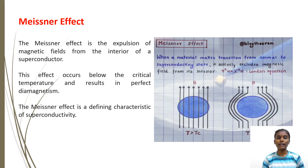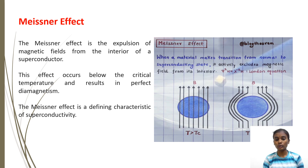The Meissner effect is the expulsion of magnetic fields from the interior of a superconductor. When a superconductor is cooled below its critical temperature, it expels any applied magnetic field. This effect allows superconductors to levitate above magnets, known as levitation. The Meissner effect occurs below the critical temperature and results in perfect diamagnetism, and is a defining characteristic of superconductivity.